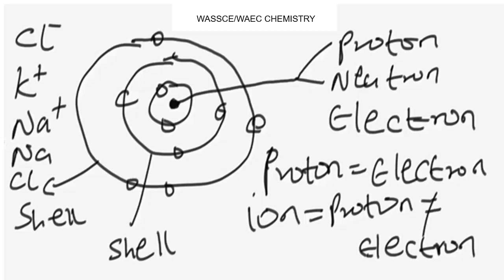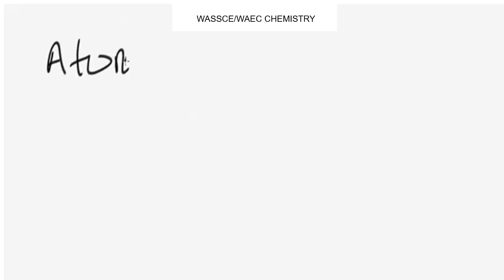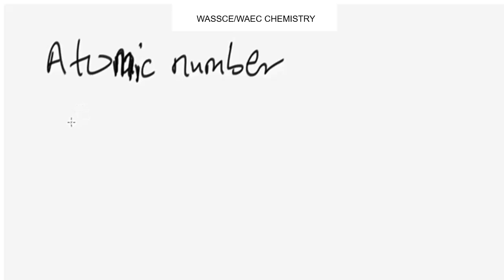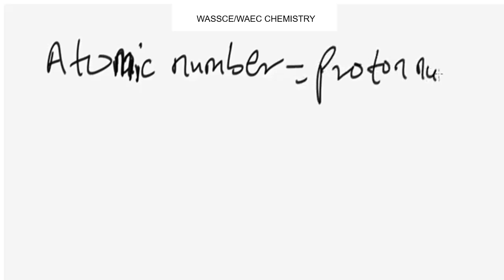Having known this, let's look at the concept of atomic number and mass number — the difference between them. The atomic number is simply the number of protons in the nucleus of an atom of an element. So the atomic number is also called the proton number. Either you call it atomic number or proton number, they are the same.